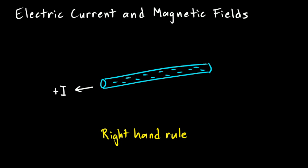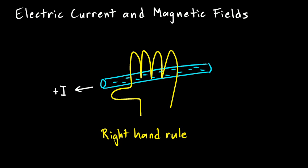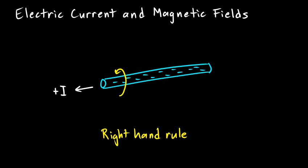The right-hand rule gives us a way to picture the direction of the magnetic field around the wire. You imagine taking your right hand and placing it over the top of the wire such that your thumb points in the direction of the current flow. So imagine putting your right hand right there, laying it down on top of that wire such that your thumb points in the direction of the current flow. Then your fingers would naturally curl around the wire in that direction, and that is the direction of the magnetic field around the wire.